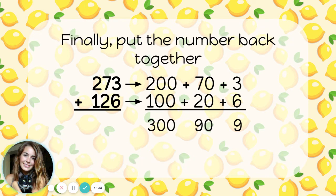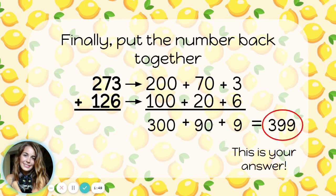Finally, we just put the number back together. What I have here is my answer in expanded form. Let's write it in standard form. 300 plus 90 plus 9, that's the number 399. And that is my answer.